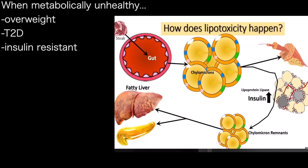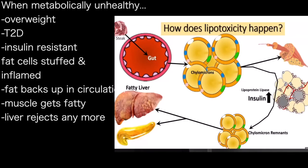Now I threw out a term called insulin resistance, and I'll define that later — but for now just keep that in your mind. So if you're insulin resistant and you have obesity or type 2 diabetes, the fat cells are already filled and overstuffed and inflamed, and they say: we can't accept fat anymore.